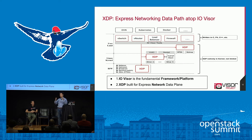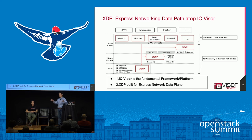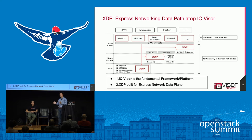Let's clarify the terms: IOVisor and XDP. IOVisor is the framework, the platform, the community. It includes BPF tools and many use cases. XDP is specifically for networking — particularly for Linux solutions — and you can build network functions based on XDP.